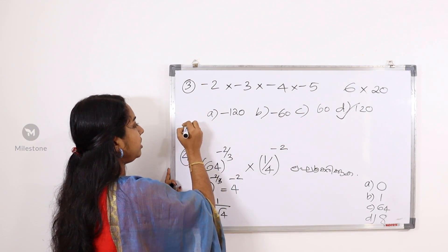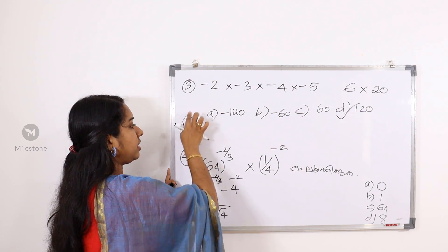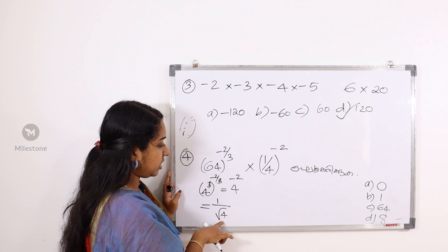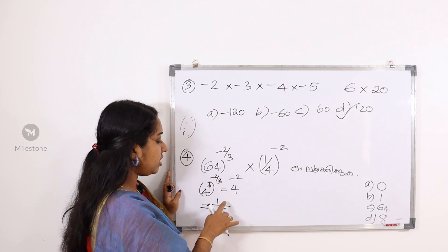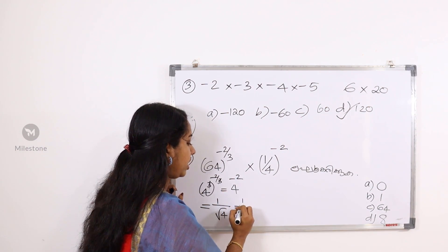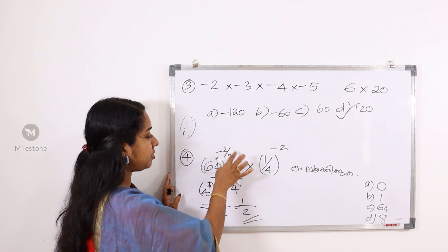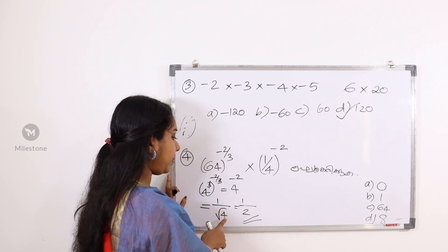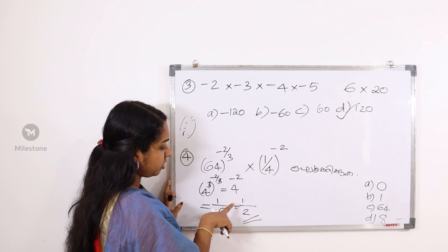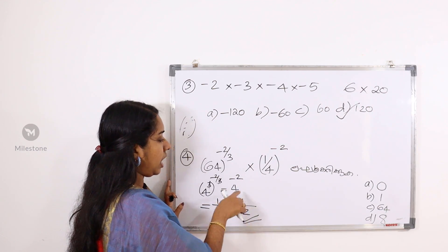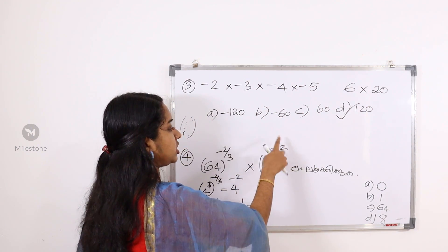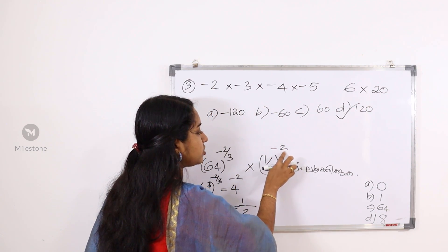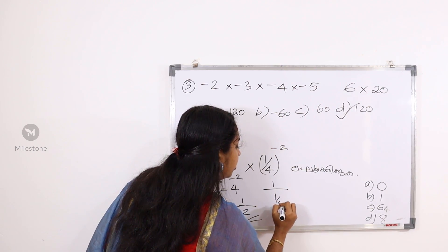Let's see this in the basic video. If the root is raised to minus 2, then 1 by 4 raised to minus 2 is 1 by root 4. 1 by root 4 is 1 by 2. Then this sum becomes 1 by 2. So 1 by 4 raised to minus 2 is 2.